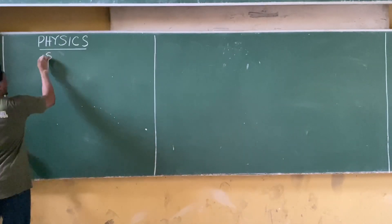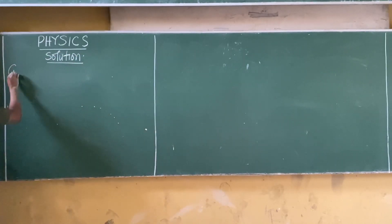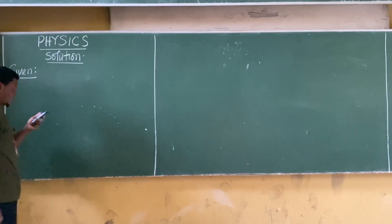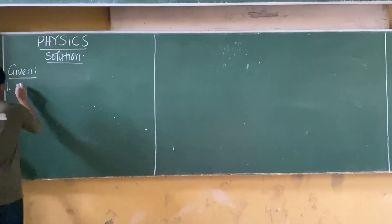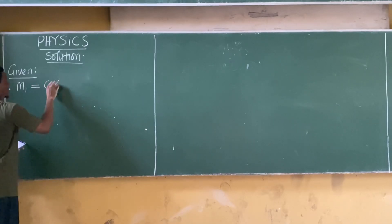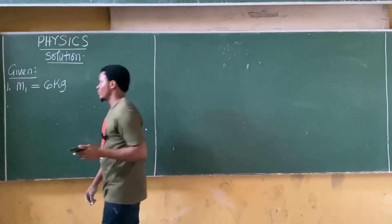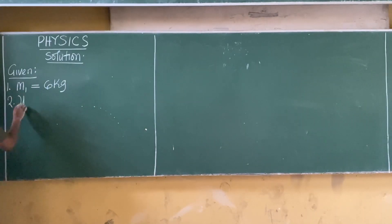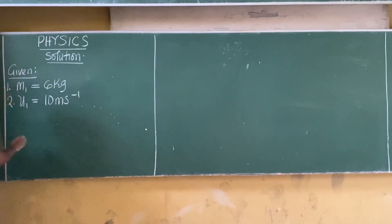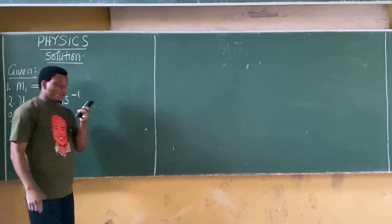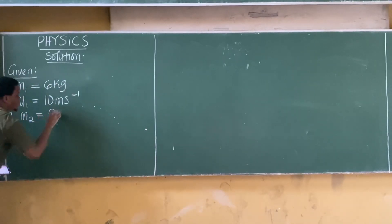As usual, the first step is to list out the given parameters. Number one: a body of mass 6 kilograms — let's call this m1 = 6 kg. Moving with a velocity of 10 meters per second, so u1 = 10 m/s. Next, it collides with a second ball, so m2 = 2.0 kilograms.